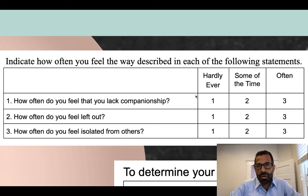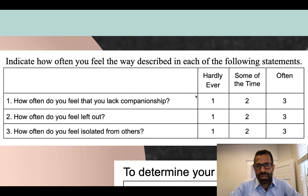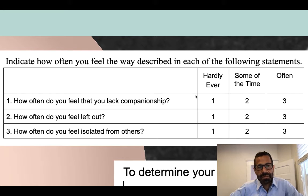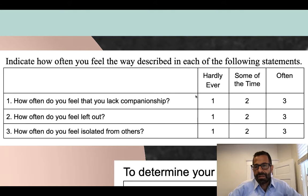To assess your own degree of loneliness, you can take the UCLA Revised Loneliness Scale — it's just three questions. Consider how often you feel the way described in each of the following statements. One: how often do you feel that you lack companionship? Hardly ever, some of the time, or often.